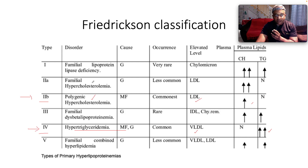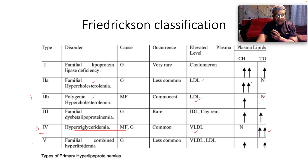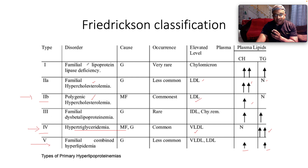Less common is type 2a, which is familial hypercholesterolemia, where LDL is once again to blame, but we see a marked increase in chylomicrons and triglycerides are normal. After that is familial combined hyperlipidemia, which implicates both very low density lipoprotein and low density lipoprotein, with elevations in both chylomicrons and triglycerides. Rare and very rare are type 3 — familial dysbetalipoproteinemia — and type 1, familial lipoprotein lipase deficiency, which implicates chylomicrons.